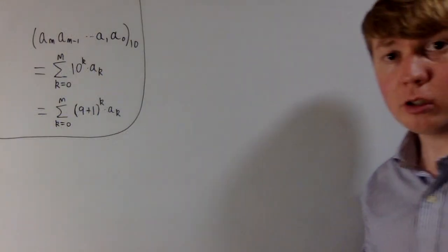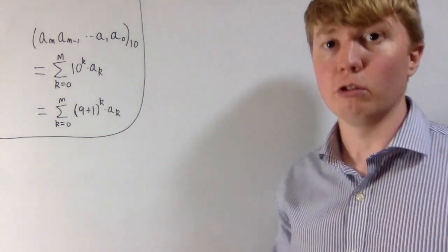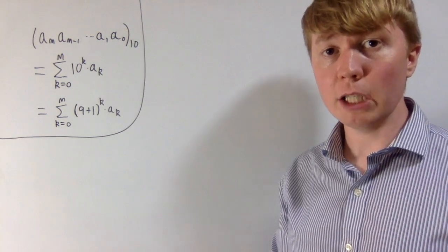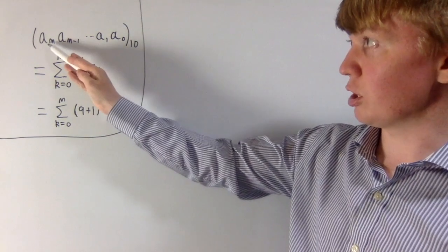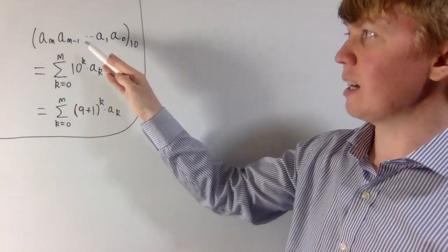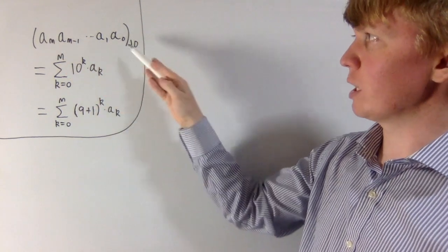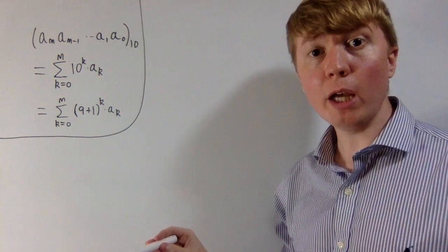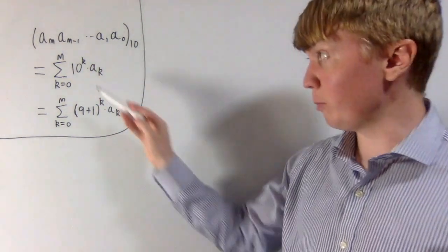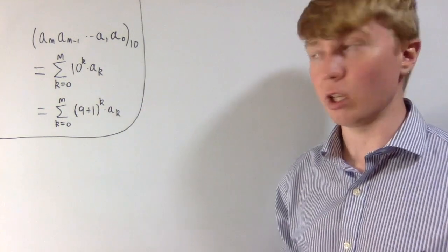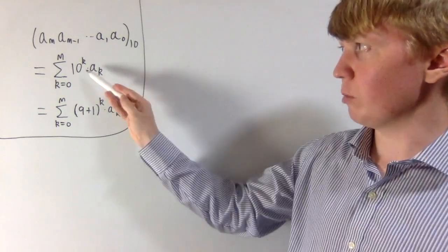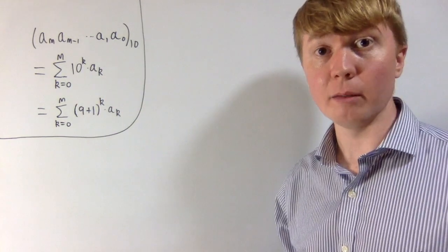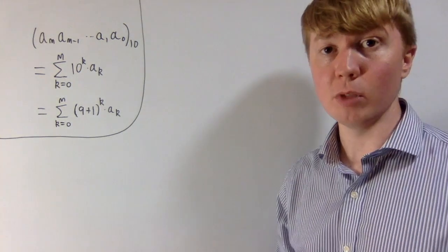Now we're going to look at the more general picture in base 10. Let's imagine we've got a generic integer expressed in base 10, with digits a_m, a_{m-1}, all the way down to a_0. We can write this as the sum of powers of 10 multiplied by our digits. Once again, we can split up each power of 10 by writing 10 as 9 plus 1, and this can be useful.